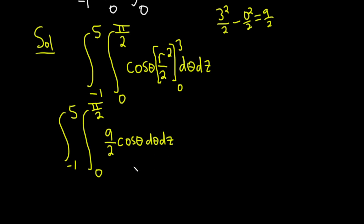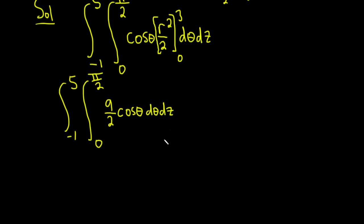So now we have to integrate with respect to theta, because that's written next. So we're basically integrating cosine. When you integrate cosine, you ask yourself, what's a function whose derivative is cosine? Well, sine. So this will be negative 1 to 5.